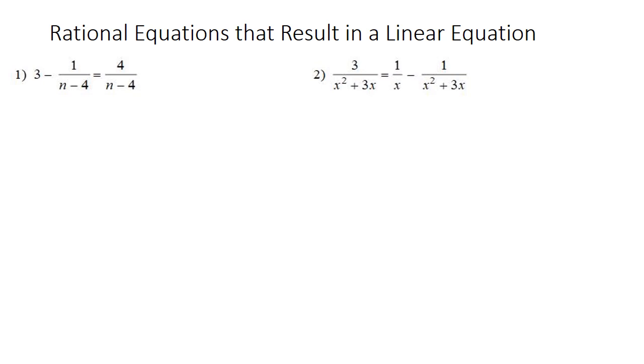So our first equation is 3 minus 1 over n minus 4 equals 4 over n minus 4. I'm going to get the 1 over n minus 4 on the other side by adding it to both sides.